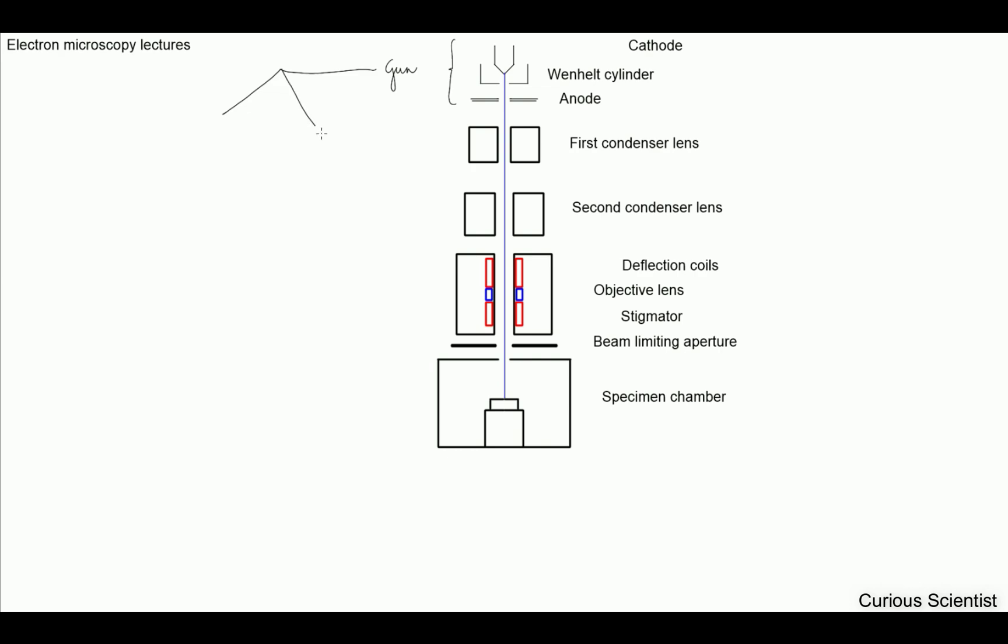Basically there are two types of guns. The first type that came first is the thermionic emission type. Usually these tips are made of either tungsten or lanthanum hexaboride.